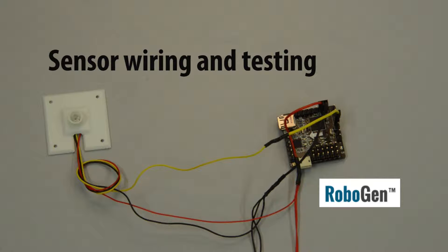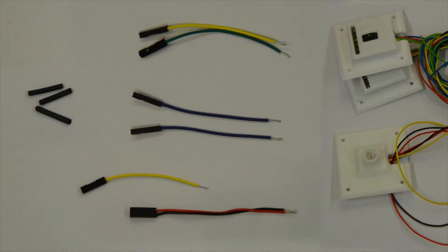How to wire and test your robot's sensors. You will need assorted wires, heat shrink, and a soldering iron.